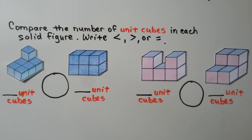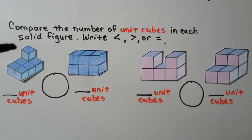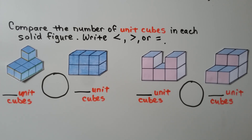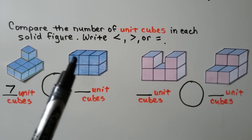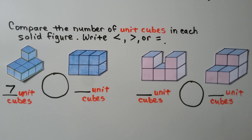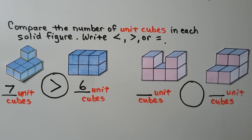Now we need to compare the number of unit cubes in each solid figure. For the first figure, I see a cube on top, but there must be one underneath it holding it up. Counting carefully: six are hiding and one is on top — that's seven unit cubes. The second figure has six unit cubes. Seven is greater than six.